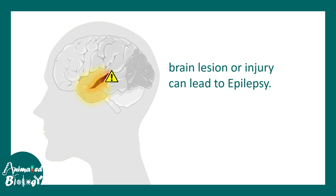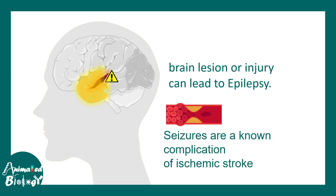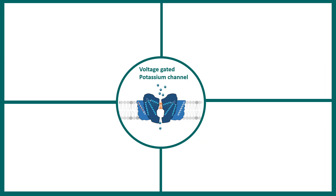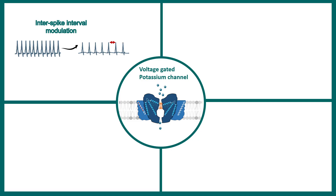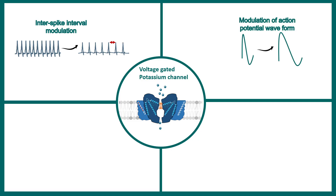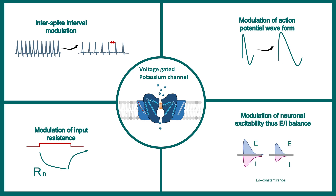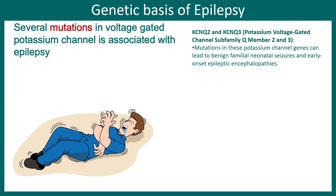Several brain lesions, including brain injury and hypoxic injury, can possibly lead to epilepsy. Voltage-gated potassium channels and sodium channels are also highly associated with epilepsy progression. Voltage-gated potassium channels modulate inter-spike interval, action potential waveform, input resistance, and overall excitatory-inhibitory balance — making them very important in the context of epilepsy development.